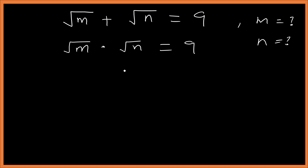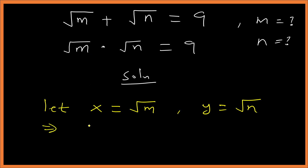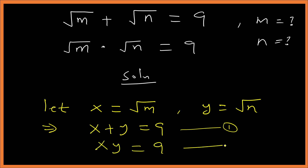Welcome to TDS online math. Let's provide solutions to this problem. For M and N, let X be the square root of M and Y be the square root of N. So this gives us X plus Y equals 9 — call this equation 1 — and XY equals 9, equation 2.